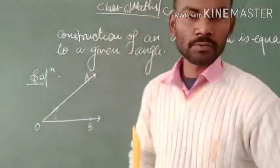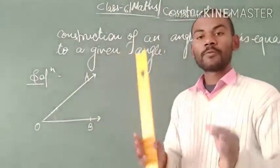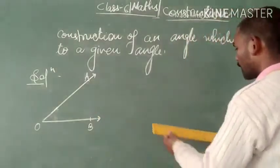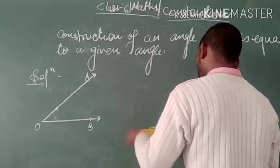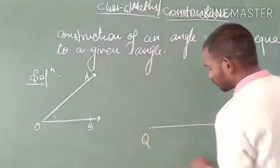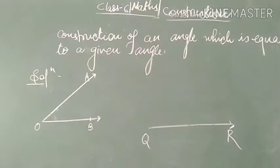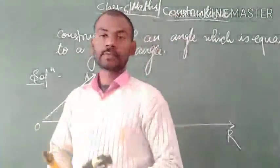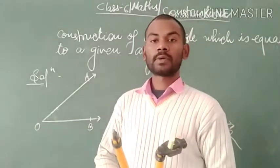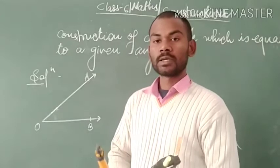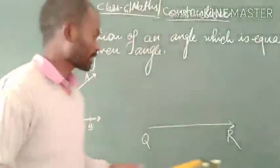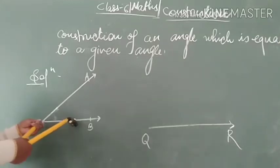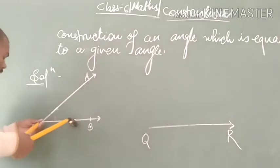In order to draw an angle equal to this given angle, first of all let's take a ray QR. Using the compass with O as centre and radius of our choice, draw an arc on the ray OA which cuts at the point C. You can take it like this and now draw an arc.